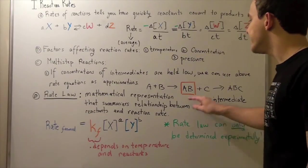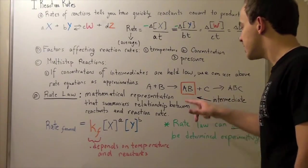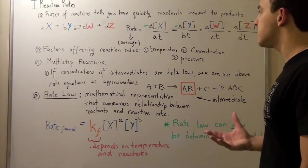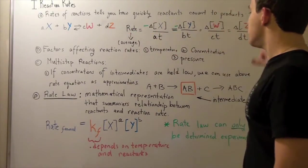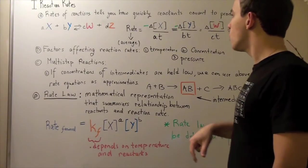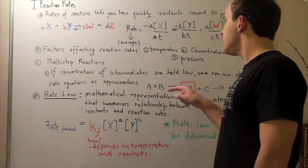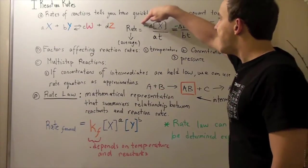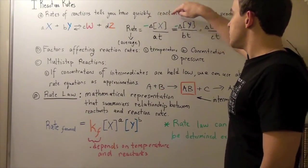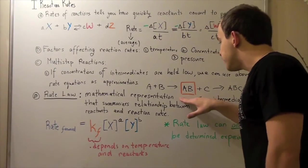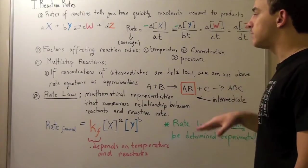These guys are intermediate. As long as the concentration of this guy is kept relatively low, we can approximate using these formulas here. Likewise, the rate of change or disappearance of A and B can be given by negative change in concentration of B divided by T. That only works if our intermediate concentration is kept low.